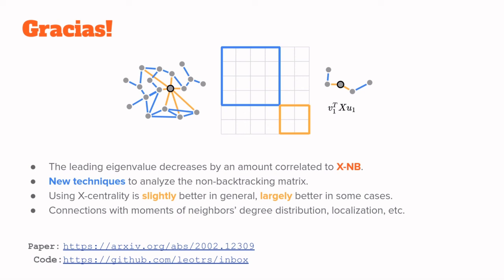So to recap real quick, the leading eigenvalue decreases by an amount that is correlated to the x and b centrality when you remove a node from the graph. We have developed here new techniques to analyze non-backtracking matrix. I gave a quick overview here, but there is much more detail in the paper and there are many interesting open questions there as well. Using the x centrality to remove nodes in order to decrease the eigenvalue is slightly better in general, but substantially better in some cases like transportation networks for example. And there are many interesting open questions here that could be the source of future collaborations. This paper is under review and you can check out the preprint on the archive and the code is also available online.